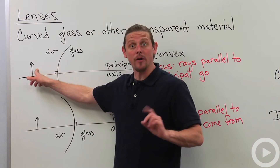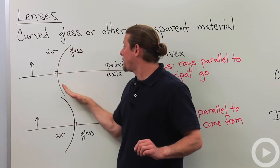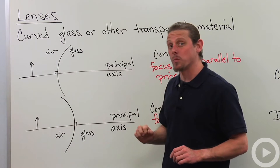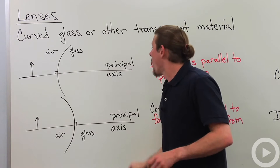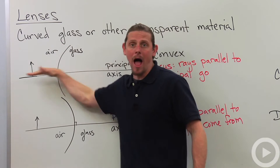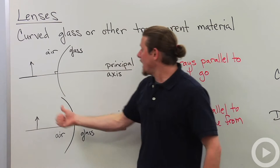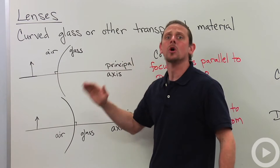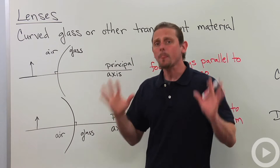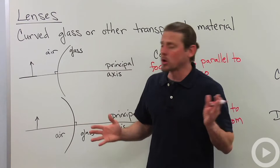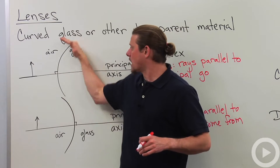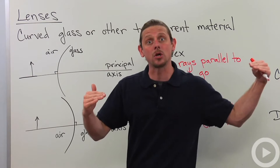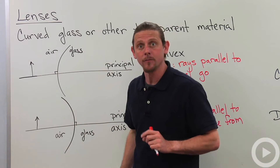Suppose I've got an object out here in air and then a piece of glass that's curved outward in a convex way. With a lens, we always have a principal axis. If light comes in exactly along the principal axis, it goes straight through the lens with no deflection whatsoever. The principal axis needs to be perpendicular to both sides because light needs to go all the way through without being deflected.